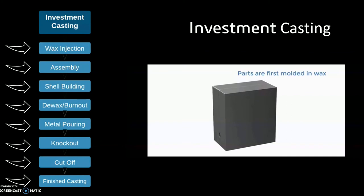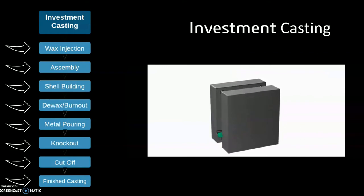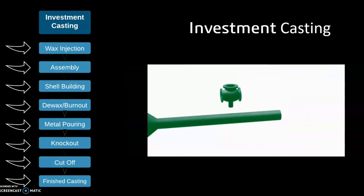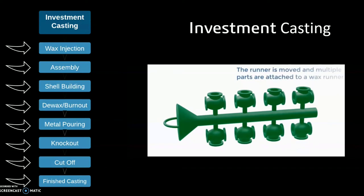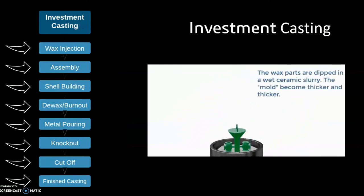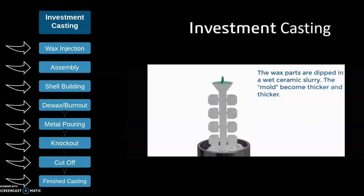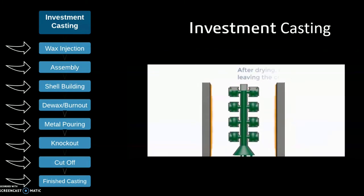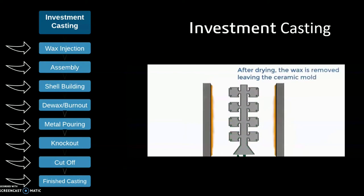Investment casting is a much longer method of manufacturing. It begins with first creating wax parts using wax injection. These parts are then assembled onto a main post or tree. Shell building involves dipping the tree into various layers of slurry, creating a ceramic shell. The wax is then removed, leaving the ceramic mould.